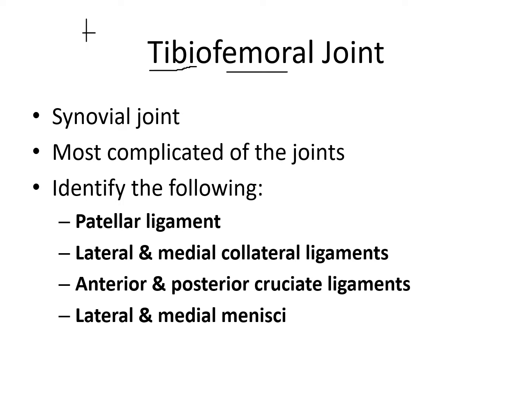You have the tibia and the femur. So you probably know what the common name for this joint is — this is the knee joint. It is a synovial joint, which is going to be the most complicated type of joint, allowing for a lot of movement with a number of supporting structures. This particular joint is often considered the most complicated of the synovial joints.